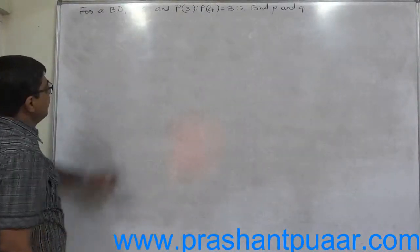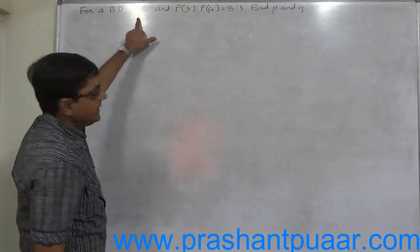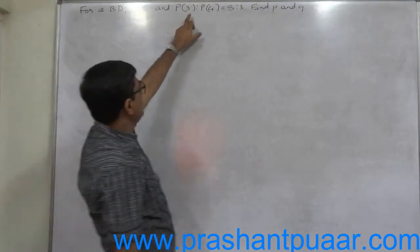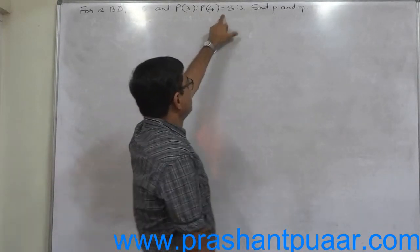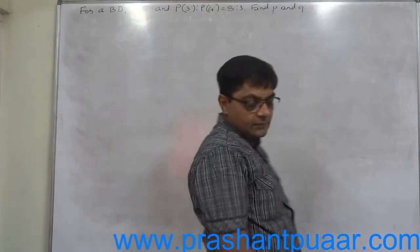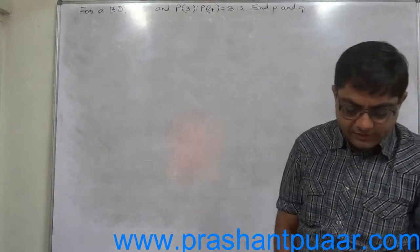For a binomial distribution n is 6, that is number of trials 6, and probability of 3 successes to probability of 4 successes equals 8 to 3. Find out the values of P as well as Q.